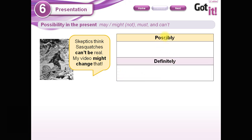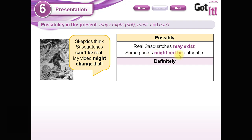We have here two groups: 'possibly' and 'definitely' — posiblemente, definitivamente. In one group, I'm completely sure. In the other, there's a possibility but I'm not sure. Look at the words we are going to use. In the 'possibly' group: 'Real Sasquatches may exist.' 'Some photos might not be authentic.' So these two words, may and might — and their negative forms, may not and might not — express possibility.